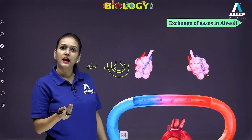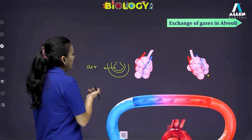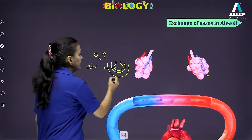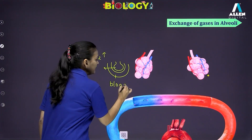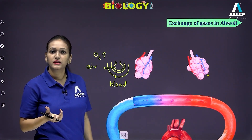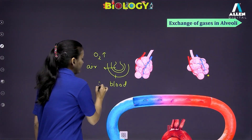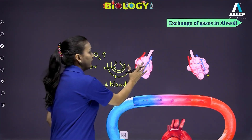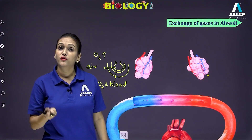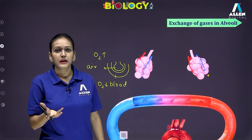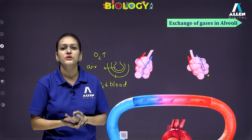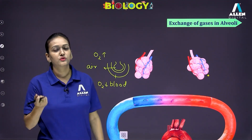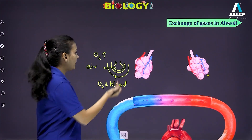Inhaled air has a good amount of oxygen — it is rich in oxygen with high oxygen content. Meanwhile, the blood running in the capillaries over these alveoli has a poor quantity of oxygen; oxygen concentration is low in the blood. So the alveolar air has a very high quantity of oxygen while the blood capillaries surrounding the alveoli have very low oxygen concentration.